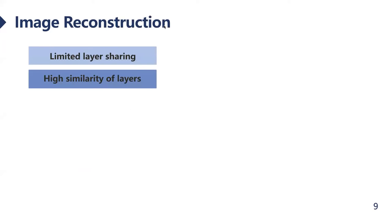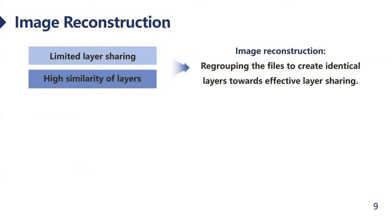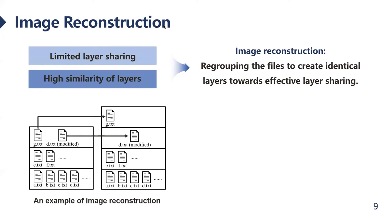The identical layers that can be shared are limited, while there is high file redundancy and partial layers have high similarity. This provides the possibility to regroup them to create identical layers, thus maximizing the overlap between images towards effective layer sharing. The figure gives an illustrative example of image reconstruction through file regrouping.